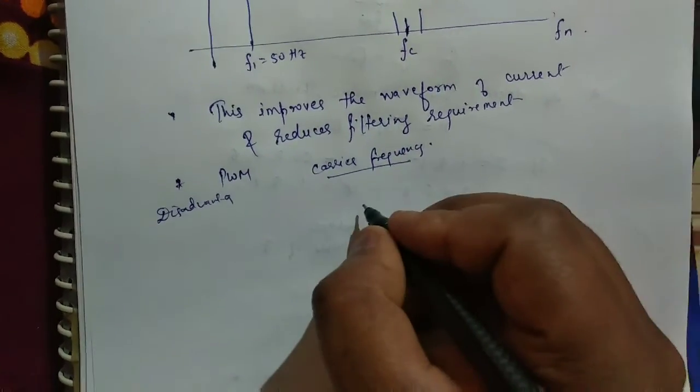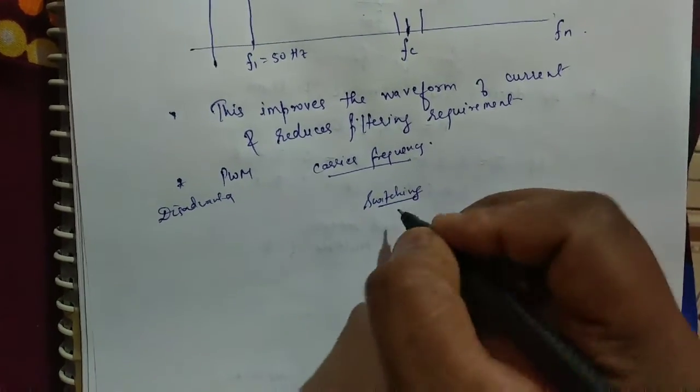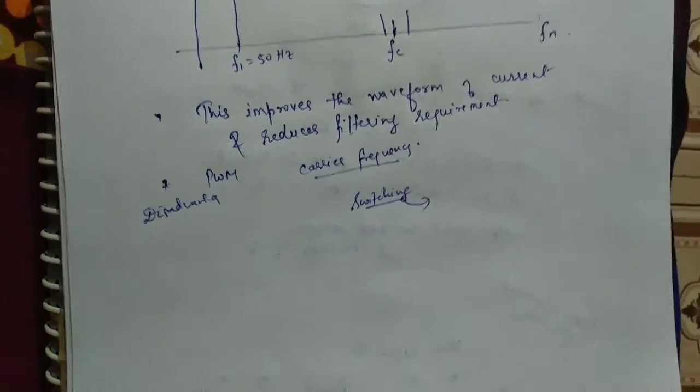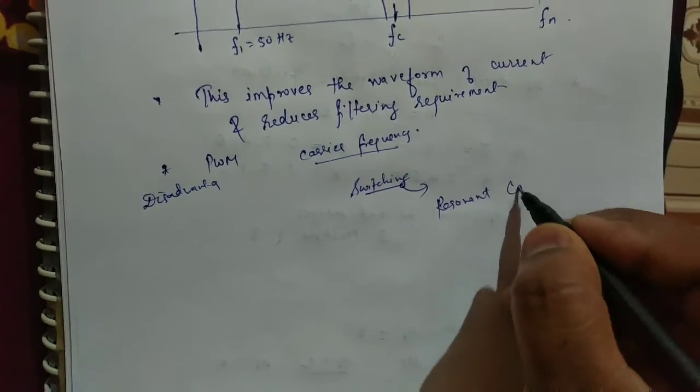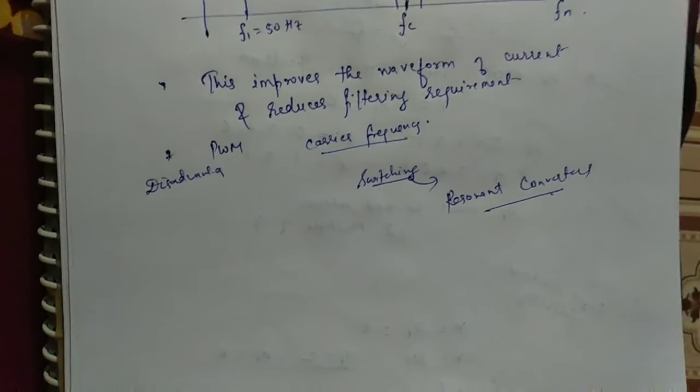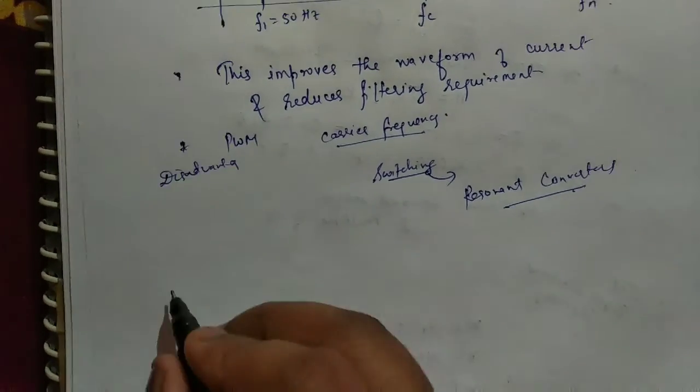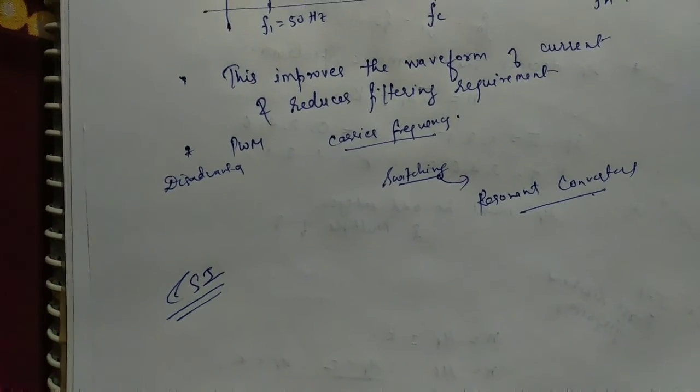This is the disadvantage. As carrier frequency increases, switching losses also increase. To reduce switching losses, we will use resonant converters. In next lecture we will see CSI, current source inverter. Thank you. I will see you in the next lecture.